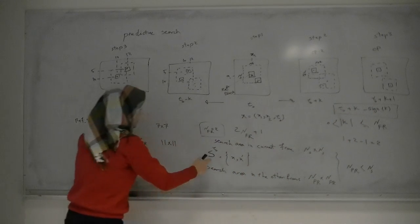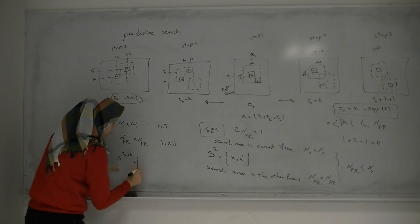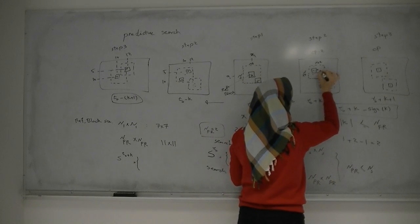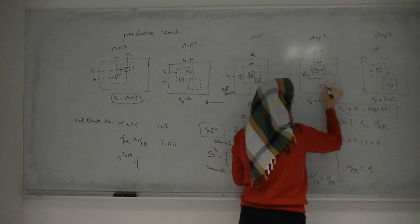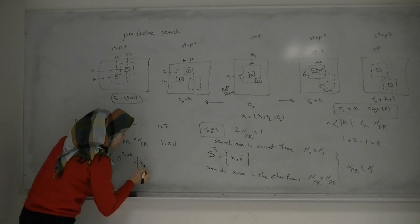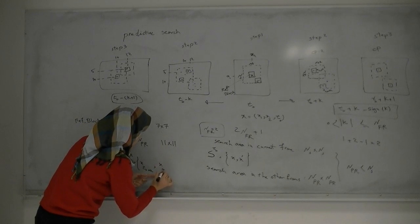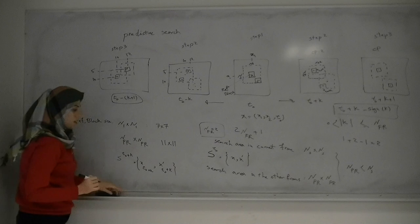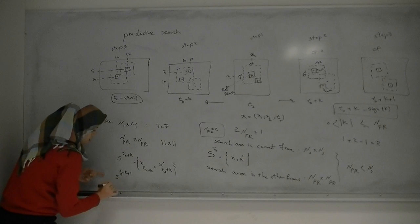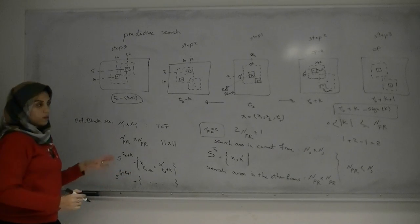We put the candidates in a set. For example, in S at T0 plus K, we have position X(T0+K) and a second X(T0+K). For the next step at T0 plus K plus 1, we have a similar structure and put the found positions there. Do you have any questions so far?